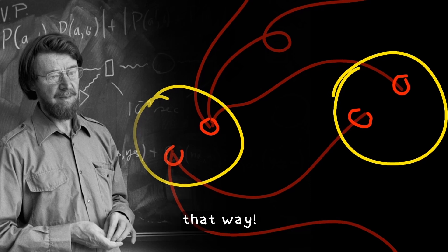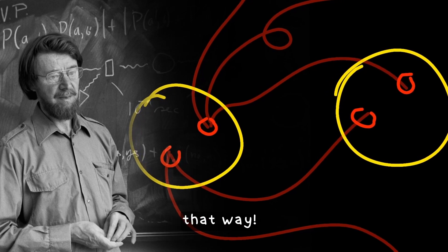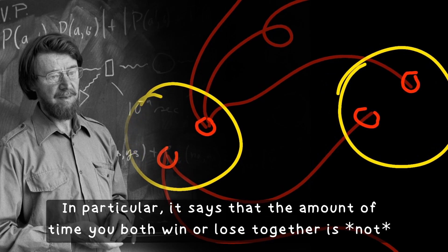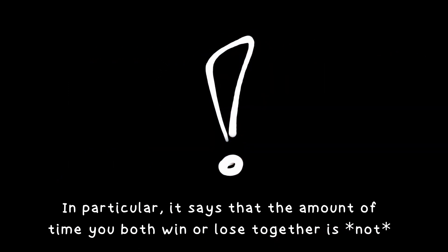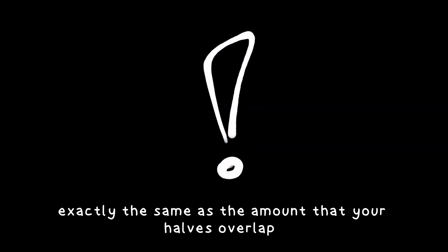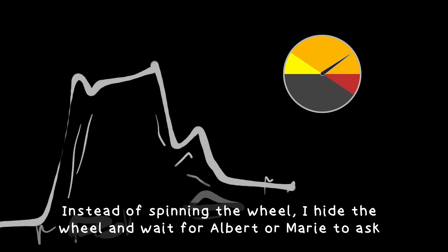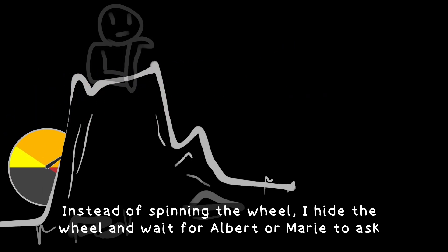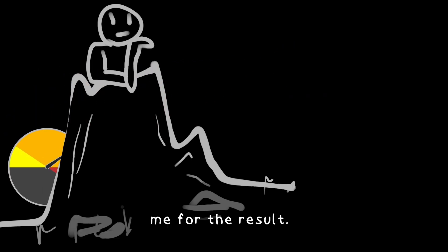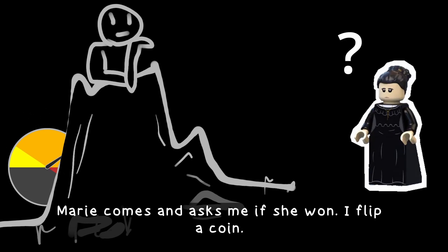Bell's theorem tells us that reality doesn't work that way. In particular, it says that the amount of time you both win or lose together is not exactly the same as the amount that your halves overlap. Let's change the game a little bit and include some strange rules. Instead of spinning the wheel, I hide the wheel and wait for Albert and Marie to ask me for results.